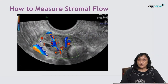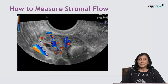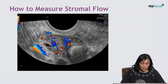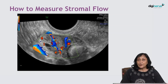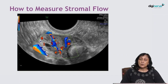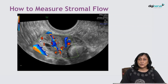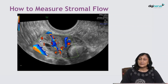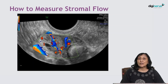Ensuring the ovarian stromal flow is a bit of a learning curve, because you have to measure the flow in the vessel which is the brightest, which is in the middle of the stroma, which is not close to the follicle and is also away from the hilar plane.